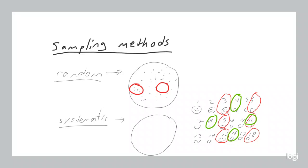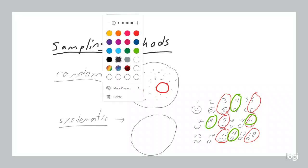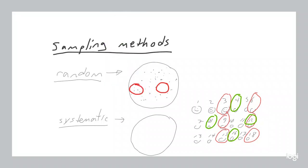If you want to do a study of an entire country, you assign a number to every individual in the population and ask every hundredth or every thousandth person. Visually, systematic sampling looks like evenly spaced points across your circle — and a lot of people look at that and think it's random, but it's not. The points are evenly spaced out; it's actually very structured.